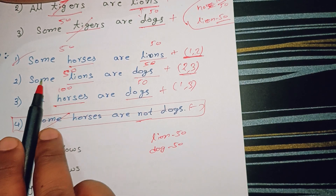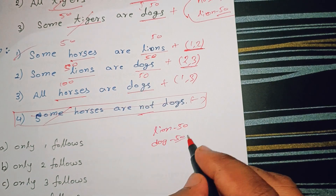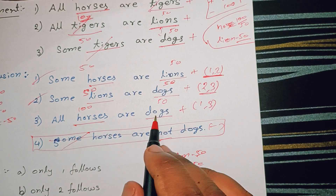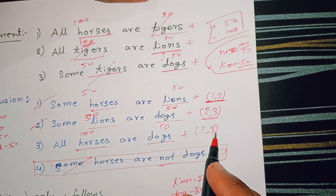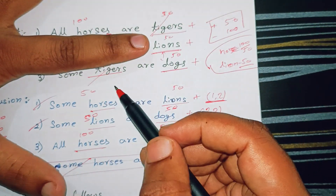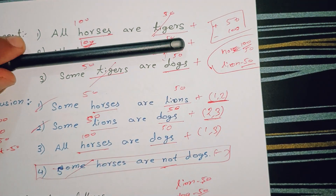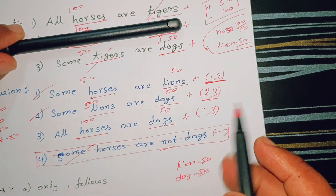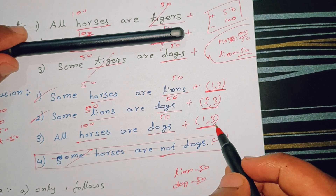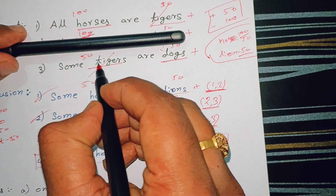Let's check the second conclusion — 'some lions are dogs'. Here are 50 and here are 50. So lions 50 and dogs 50. So 50 and 50 is correct. Let's check the third conclusion — 'all horses are dogs', statements 1 and 3. So we close the second statement. First statement and second statement — first two matched. We have to move this one-three match. We can find the one-three match — here is the tiger.